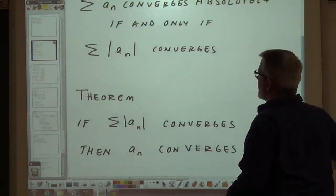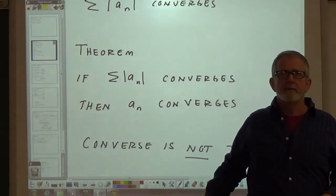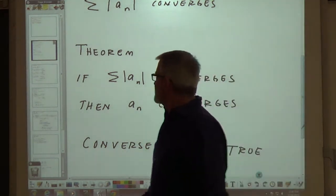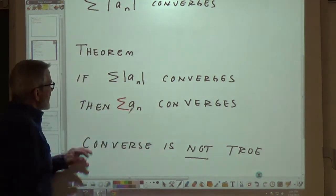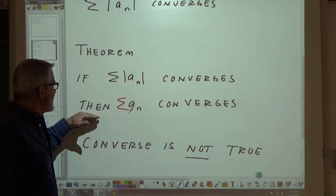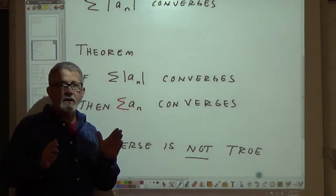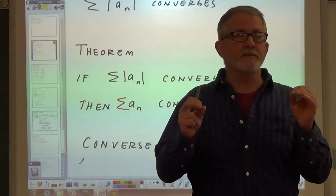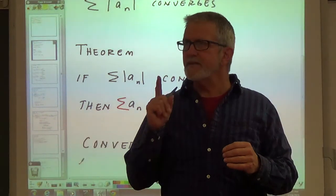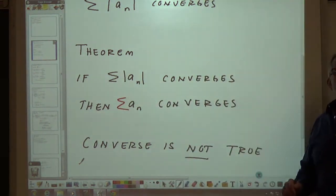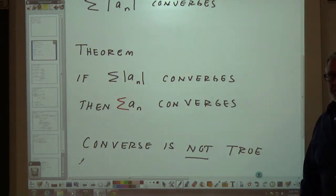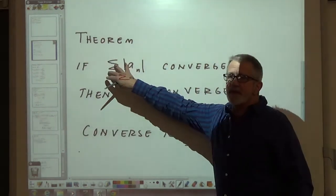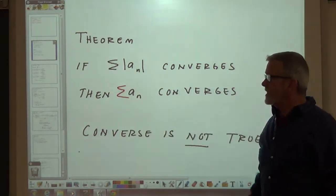Here's a nice little theorem: if the absolute value of that series converges, then that series converges. We have to be very careful with most of our theorems in calculus — we have to think about the converse. Whenever you see a theorem, you must think about the converse and ask, is the converse true? The converse of this particular theorem is not true, so we'll keep that in mind. We've got the definition of absolute convergence and this theorem that if the absolute value of a series converges, then the series converges.